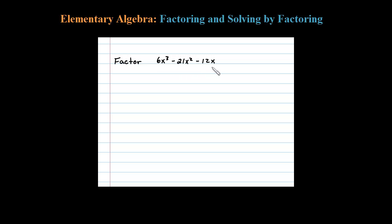Here we're asked to factor a trinomial. Notice this trinomial has a GCF—3x divides into all those terms evenly. So if we factor out 3x, we'll be left with 2x² - 7x - 4. You can double-check that by distributing the 3x.